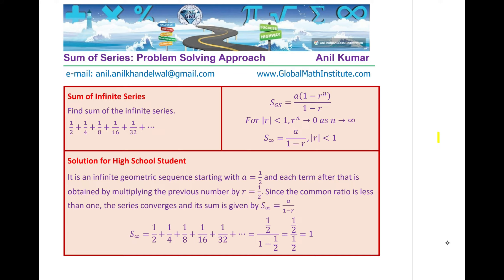For a geometric series, the sum is given by the formula: a × (1 − r^n) / (1 − r). When r is less than 1 and n approaches infinity, r^n approaches 0 — for example, (1/2)^n approaches 0. So the formula reduces to a / (1 − r). Substituting our values: (1/2) / (1 − 1/2) = (1/2) / (1/2) = 1. The answer is 1.